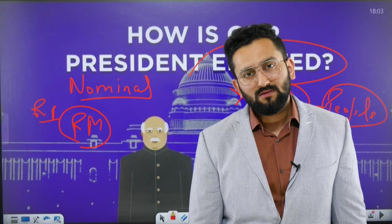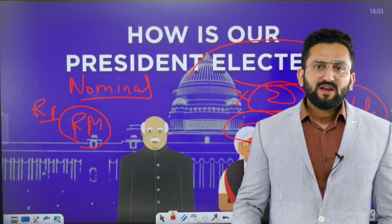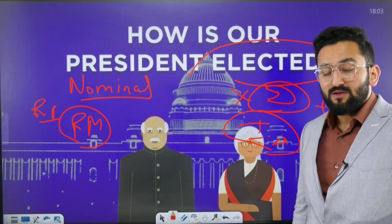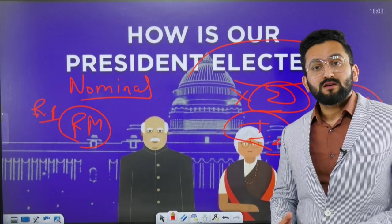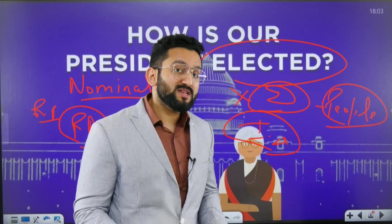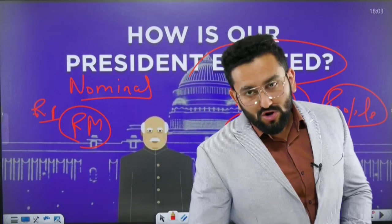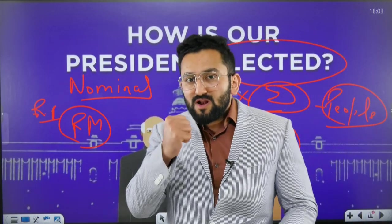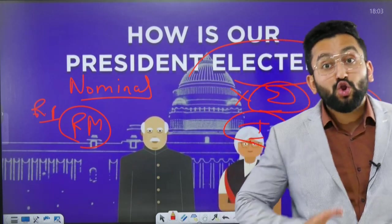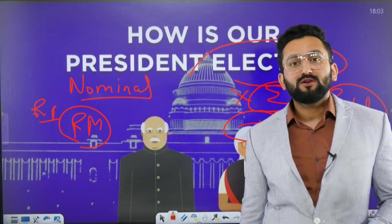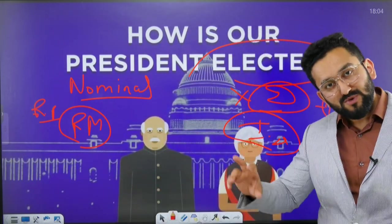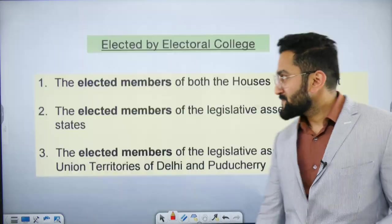If real power is with the PM and the President's position is nominal, then conducting a massive exercise where all eligible adult voters participate would be a wastage of time and public money. That is why indirect election is better. Also, the US model is different — in the US presidential election, every adult voter votes because real power is with the President. The second logic given by Nehru was that if the President comes through direct election, there may be conflict between President and Prime Minister, as the President might claim to represent the will of the people directly.